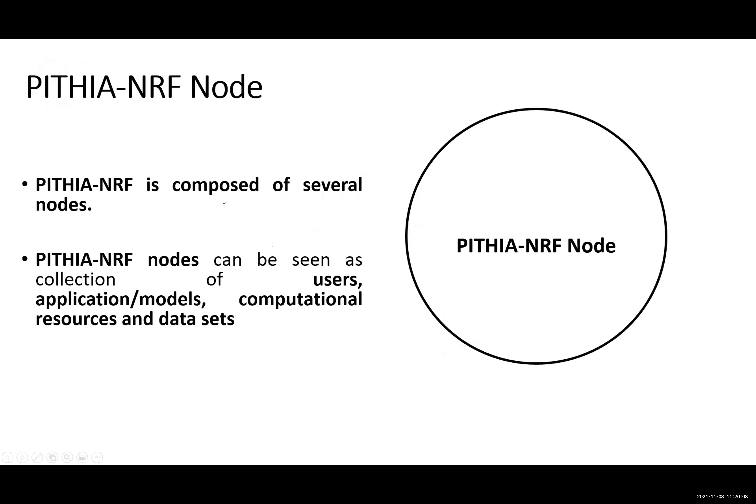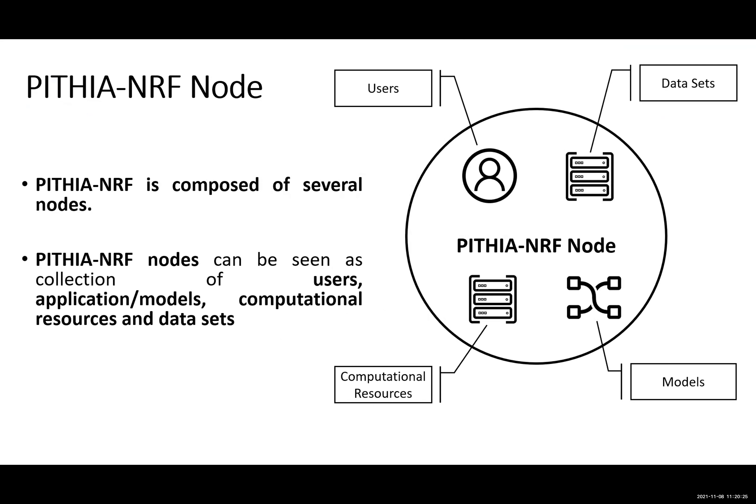One of the main concepts of Pizia are the nodes. We can see the nodes as composed of several entities: users, computational resources, models, and data sets. Our goal in Pizia is to interoperate all these resources in order to give something that is more than the sum of all the various functionalities of the nodes — to create an added value in the integration of all these nodes.